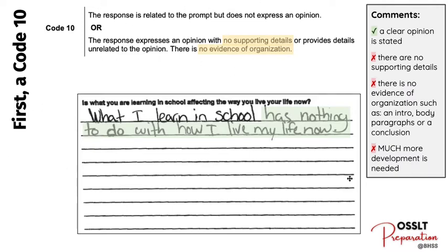Ideally, you would want at least four paragraphs: one introduction, two body paragraphs, and one concluding paragraph. So make sure when you are self-assessing your response — if this is kind of what your response looks like, it might be a Code 10.